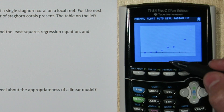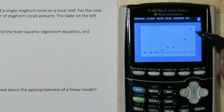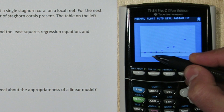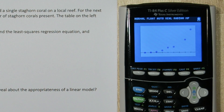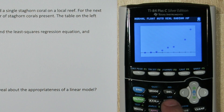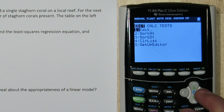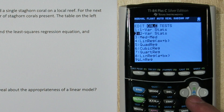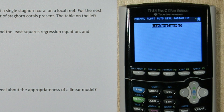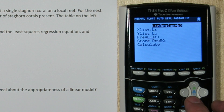Now there's obvious curvature here. That suggests a linear model is not appropriate. But it says find the least squares regression equation. So if we press stat and go to calculate, linear regression, we'll leave this as list 1 and list 2.